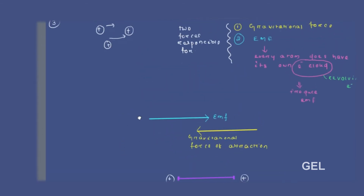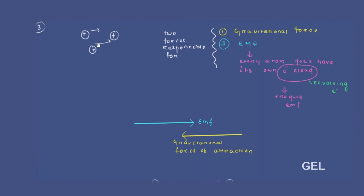Now, moving to the very important point: different nuclei are coming close to each other due to gravitational force. Along with that, there is another force also responsible. So there are two forces in our discussion here. The first force is the gravitational force of attraction. The second force is called the electromotive force, which acts in the opposite direction to balance the gravitational force of attraction.